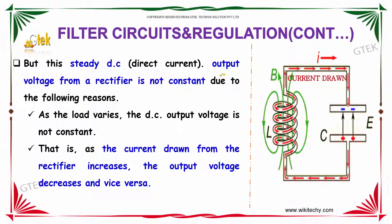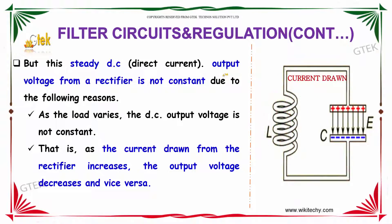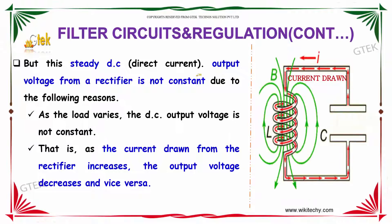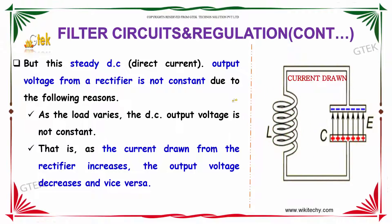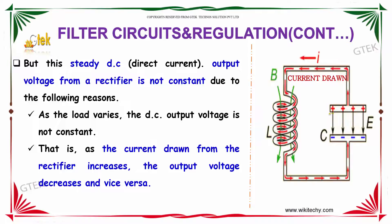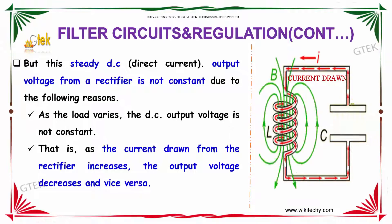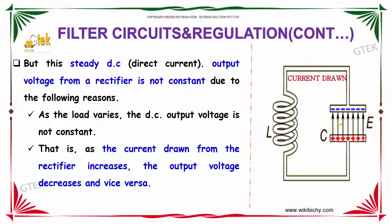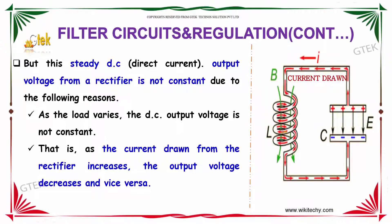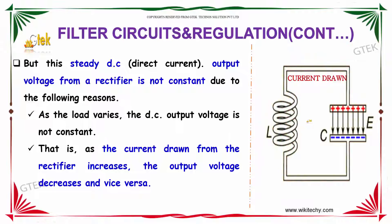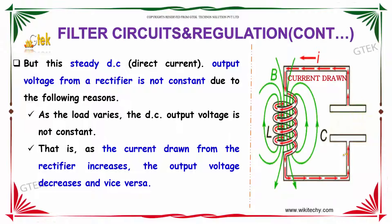But this steady DC output voltage from a rectifier is not constant due to the following reason. As the load varies, the DC voltage output is not constant — that is, as the current drawn from the rectifier increases, the output voltage decreases.